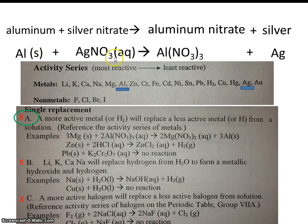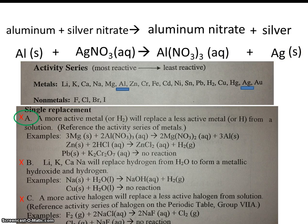Remember that this silver nitrate will be taking place in solution. So its phase notation will be aqueous. Aluminum nitrate will be in solution. And this will be elemental silver. You'll see it appear at the bottom of the beaker as a solid.